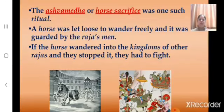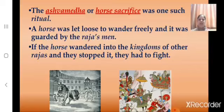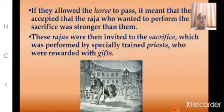Can you name a ritual that was used to recognize someone as a raja? The Ashwamedha, or horse sacrifice, was one such ritual. A horse was let loose to wander freely, guarded by the raja's men. If the horse wandered into the kingdoms of other rajas and they stopped it, they had to fight with the raja who was going to perform the Ashwamedha yagya. And if they allowed the horse to pass, it meant they had accepted that the raja performing the sacrifice was stronger than them.